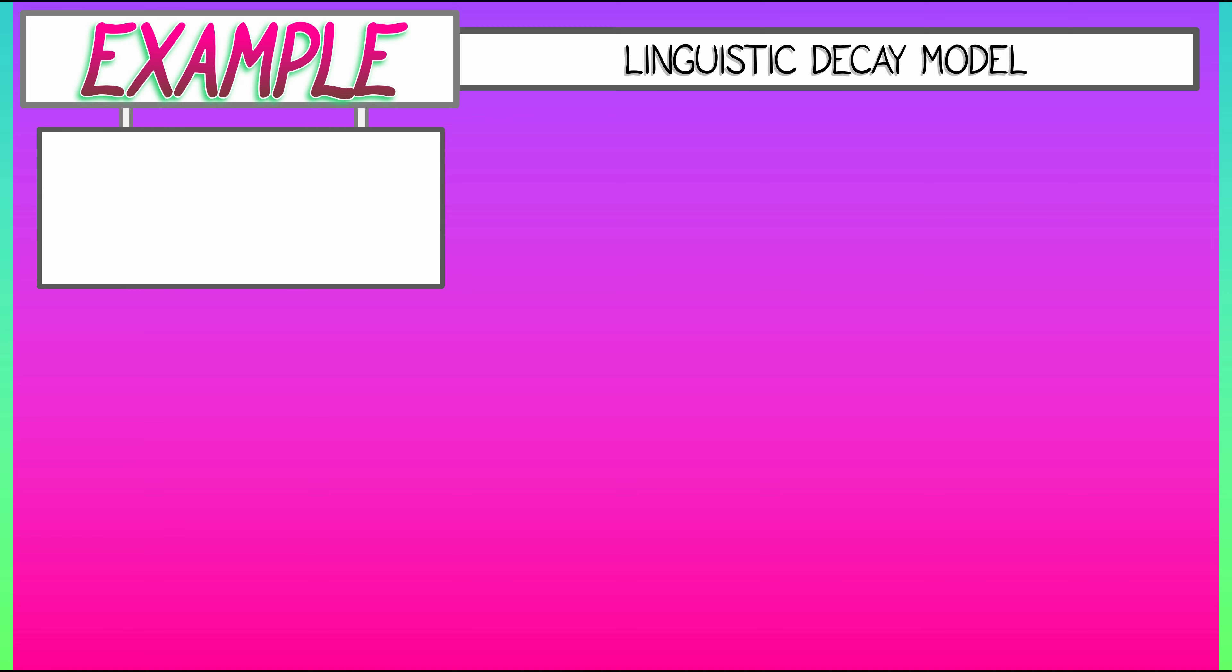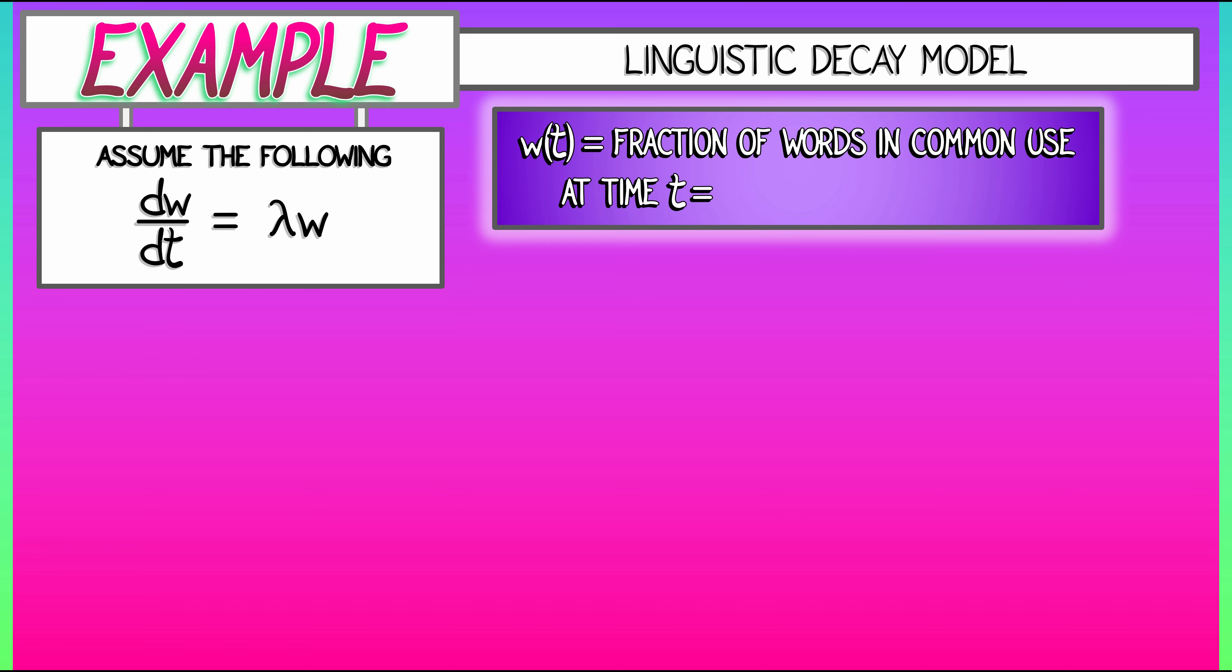Is that it? Is there more? Of course there's more. Here's an example, kind of a weird example, coming from a speculative model in linguistics. Let's assume dw/dt equals lambda times w, where w(t) is the fraction of words in a language in common use at time t equals zero that are still in common use at some positive time t.